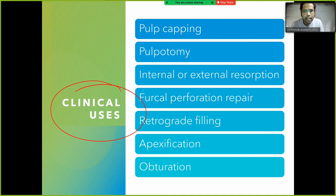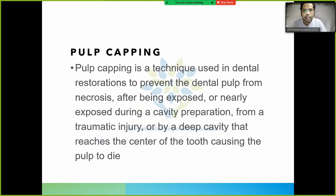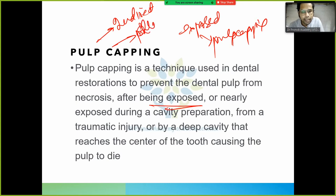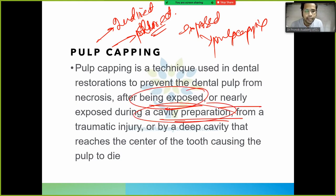The clinical uses of MTA include: pulp capping, pulpotomy, internal or external resorption treatment, perforation repair, retrograde filling, apexification, and obturation. Pulp capping is a technique to prevent dental pulp from necrosis after exposure or near-exposure during cavity preparation, traumatic injury, or a deep cavity. There are two types: indirect and direct pulp capping.